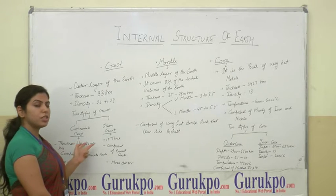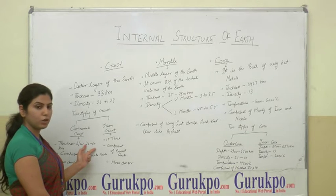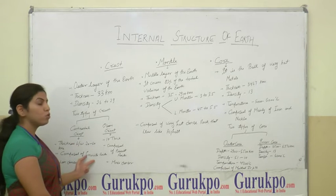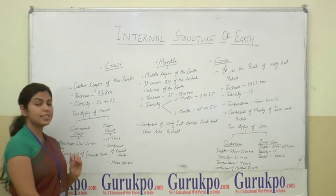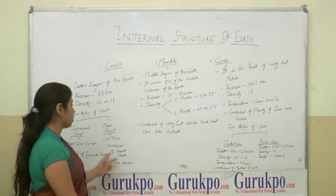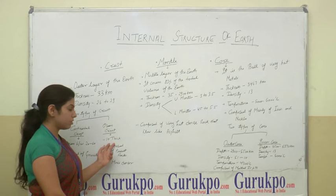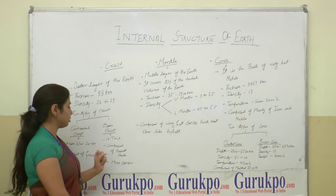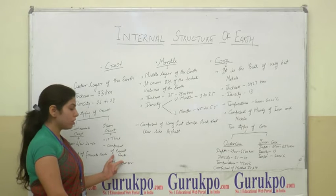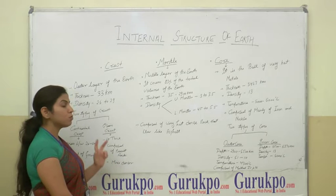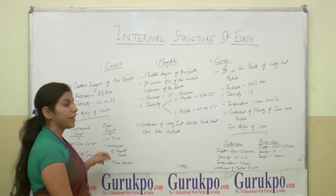The thickness of the continental crust is between 20 to 60 kilometers and it is composed of granite rocks, which are less dense than basalt. The ocean crust thickness is 10 kilometers and it is composed of basalt, which is more dense than granite rocks.